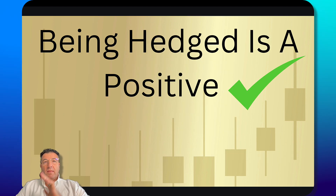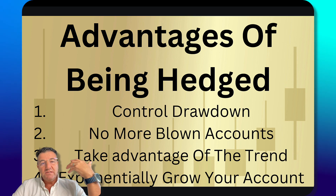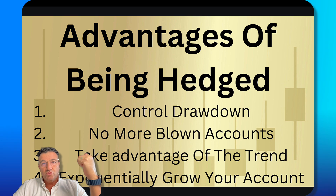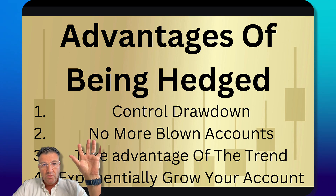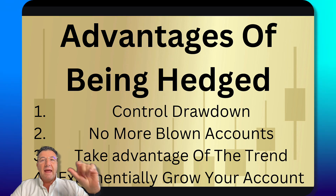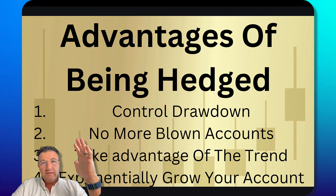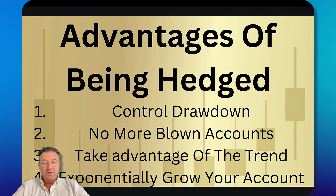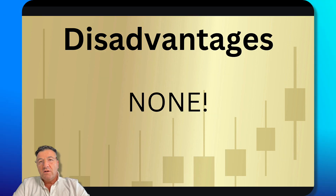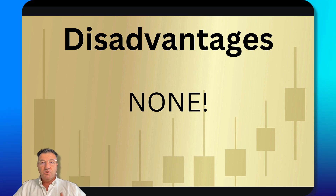Being hedged is a positive and there are various mechanisms to take advantage of it. The advantages of being hedged include: one, controlling your drawdown; two, never blowing your account again once you're hedged and use the hedge correctly to exit; three, taking advantage of the trend if you can read a chart; and four, exponentially growing your account. Banks and institutions use hedging — that's why they're called hedge fund managers.